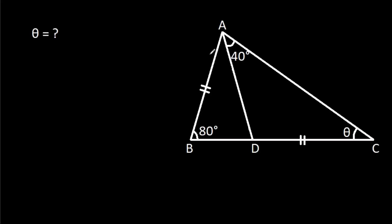In this video, we have been given that AB is equal to CD, and angle ABC is 80 degrees, angle CAD is 40 degrees, and angle ACB is theta. We have to find theta.